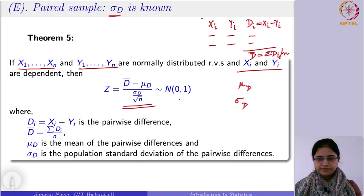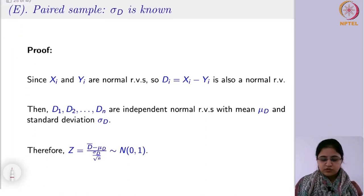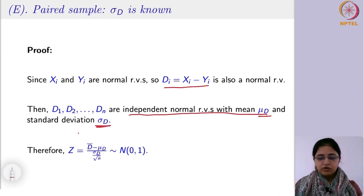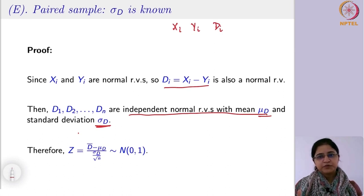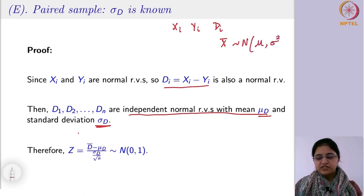Let us see why. Since x_i and y_i are normally distributed, their linear combination d_i is also a normal random variable. These d_i's are independent normal random variables with mean mu_d and standard deviation sigma_d. Because if you have dependent samples x_i and y_i and take their corresponding pairwise differences, you have transformed the dependent sample into a single independent sample. We saw earlier that if you draw a single sample from a population where the standard deviation is known, the sampling distribution follows normal with mean mu and variance sigma-squared over n.